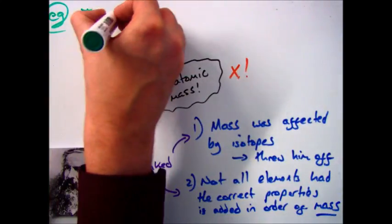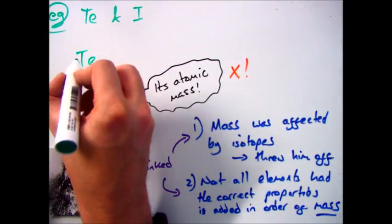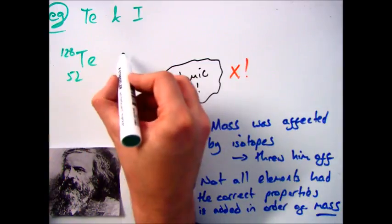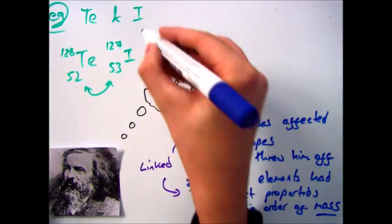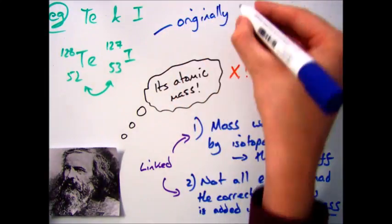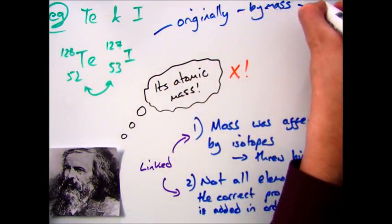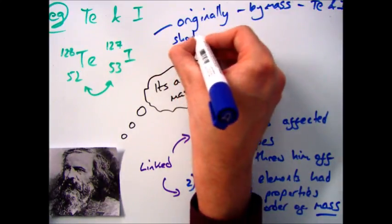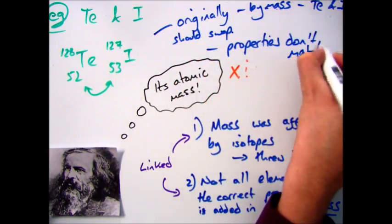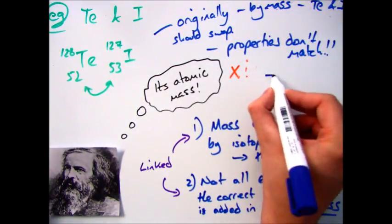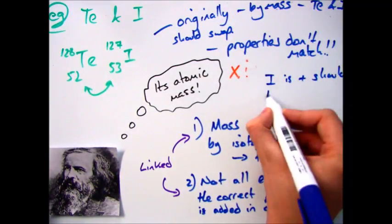Now a good example of this is looking at tellurium and iodine. Tellurium which is today in group 6, and iodine which is in group 7. So originally they were the other way round, because of the atomic mass which you can see at the top. But the properties didn't match up, so iodine matched up with the properties of the rest in group 7. So what Mendeleev did was he swapped them around and put them into the groups based on their properties, which today is known as the atomic number.